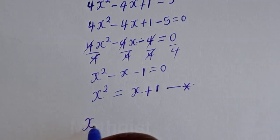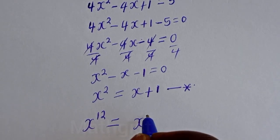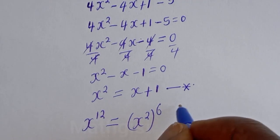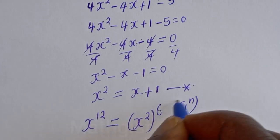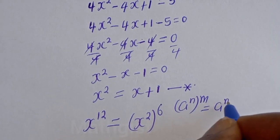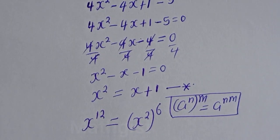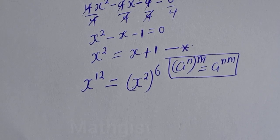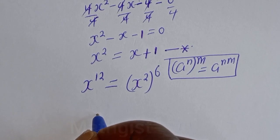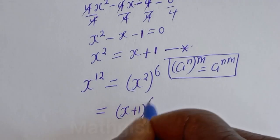We know that x raised to the power of 12 can be written as (x squared) raised to the power of 6, using the exponential rule that a to the power n, to the power m, equals a to the power nm. Since x squared equals x plus 1, this becomes (x plus 1) to the power of 6.